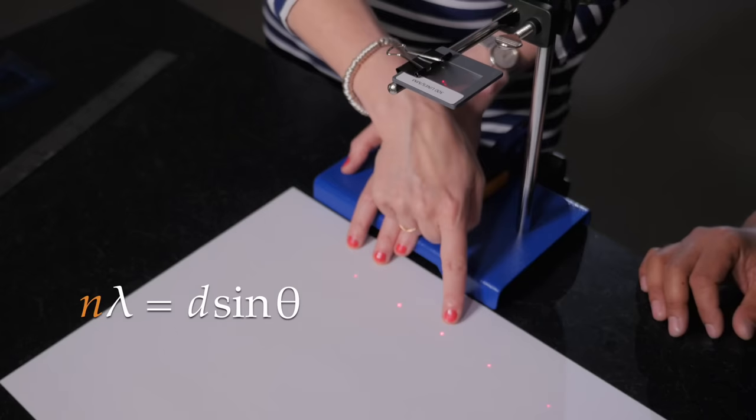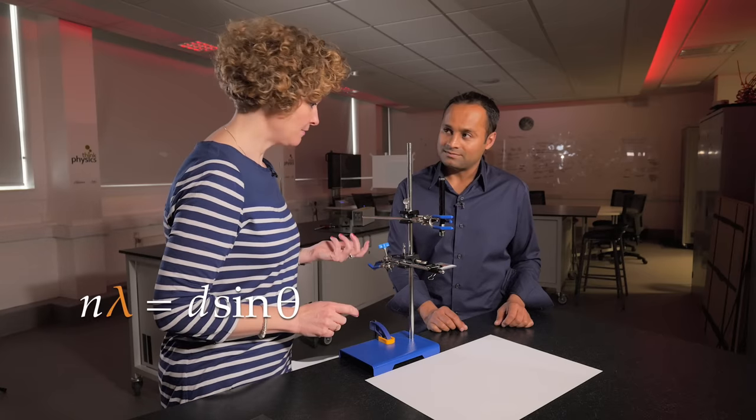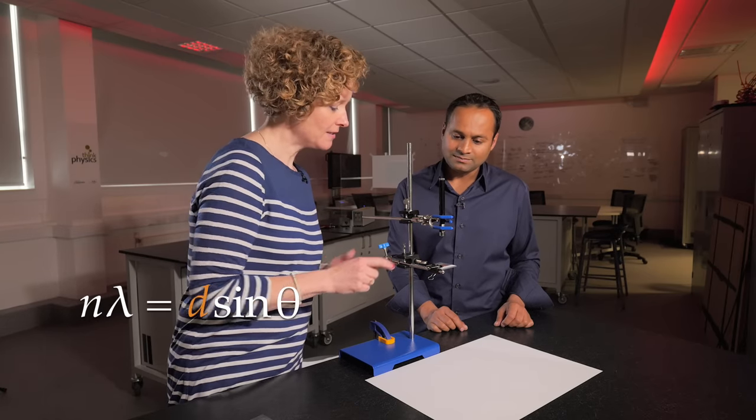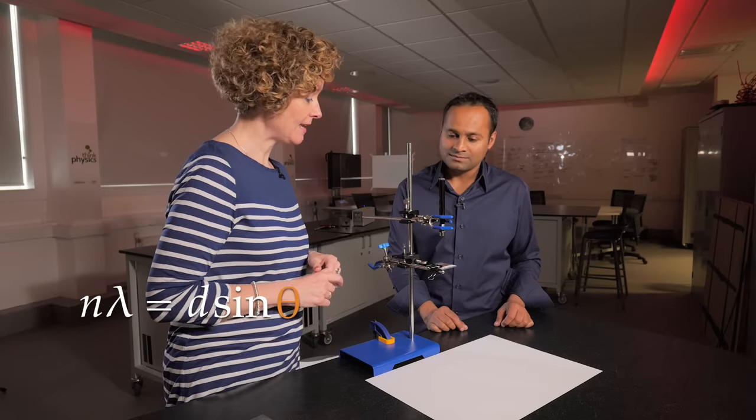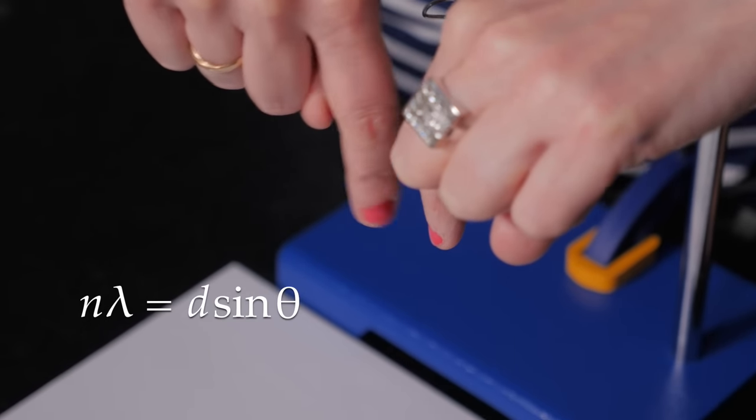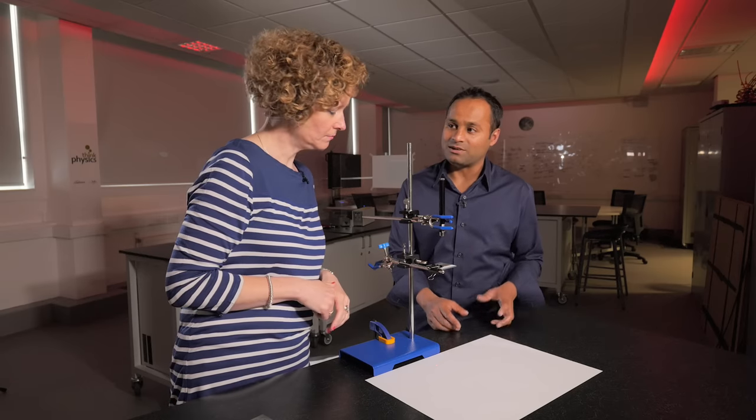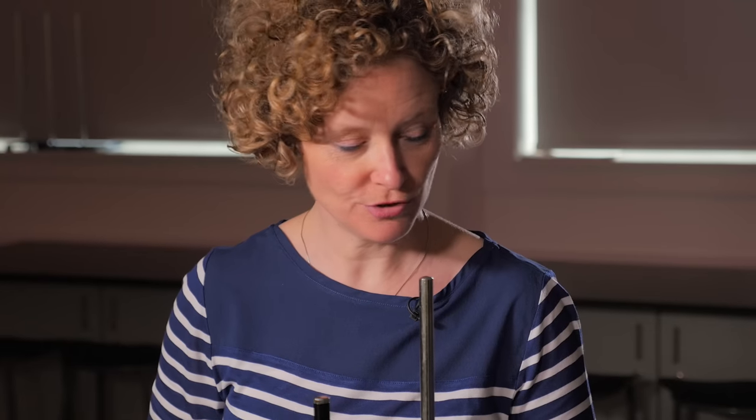Yes, the relationship here is n lambda equals d sine theta. So n is the order of the fringe that you're getting, lambda is the wavelength, d is the spacing of the lines on the diffraction grating, and theta is the angle between the straight through direction and the fringe that you're looking at. Yeah, but these are quite big angles so students can't get away with using a small angle approximation for sine theta. That's right, they should use trigonometry to get theta.